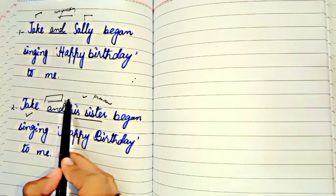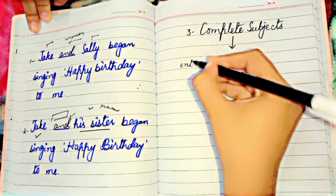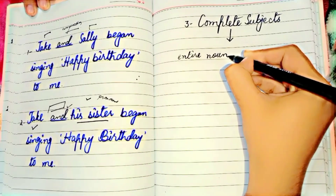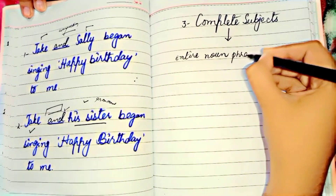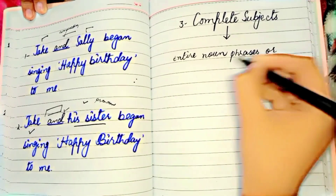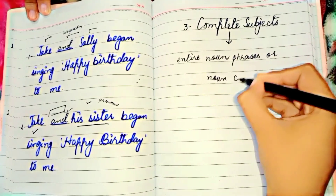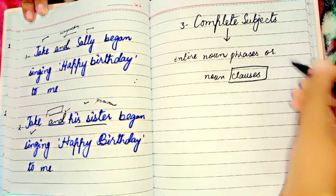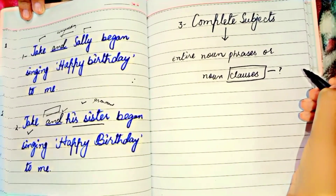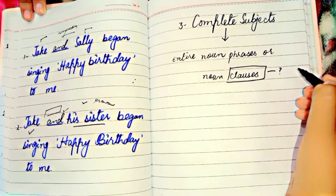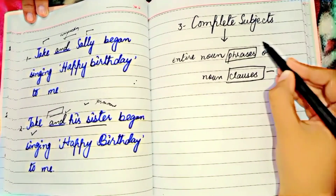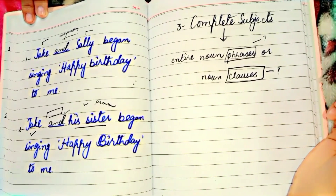Number three: we have complete subject. A complete subject is the entire noun phrase or noun clause that includes the simple subject and any words or phrases that modify it. A clause contains a subject and a predicate, whereas a phrase acts as a single unit but does not contain a subject or predicate.